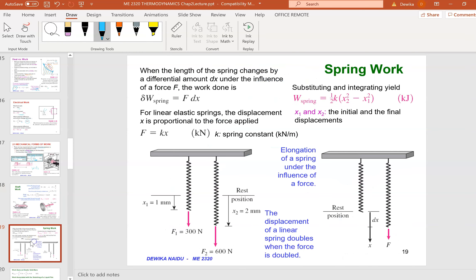Next is spring work. This is very common - spring work is ½k(x₂² - x₁²), both are squared. When the length of spring changes by an amount dx under the influence of force F, work done is F dx. For linear elastic springs, the displacement x is proportional to the force applied, so F = kx.